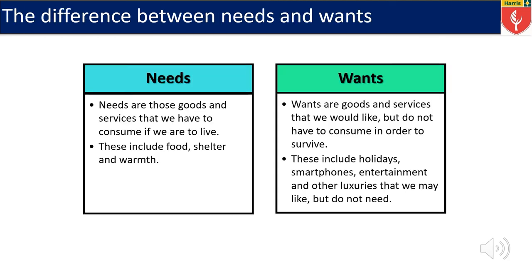Now let's look at the difference between needs and wants. Needs are those goods and services that we have to consume if we are to live — these include food, shelter, and water. Sometimes students like to add smartphones, but we don't really need our smartphone to live. A want is something that we like to consume but don't need in order to survive — these include holidays, our smartphone, entertainment, and other luxuries that we may like but do not need.